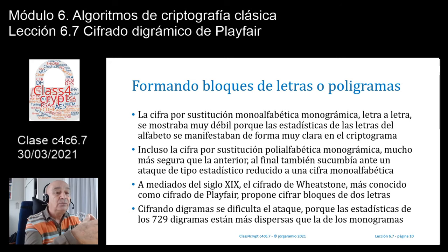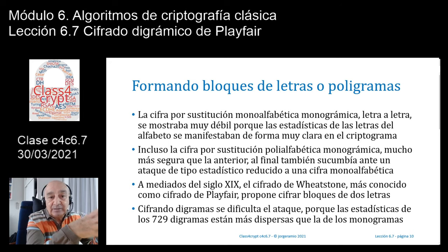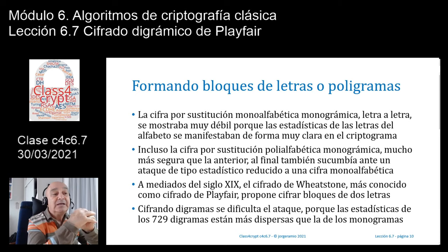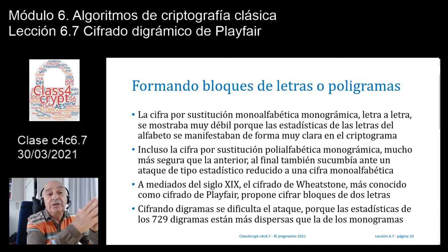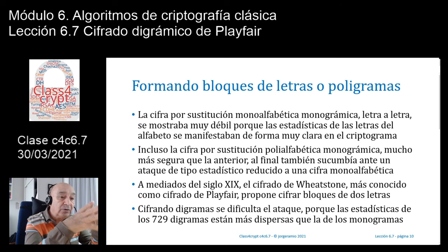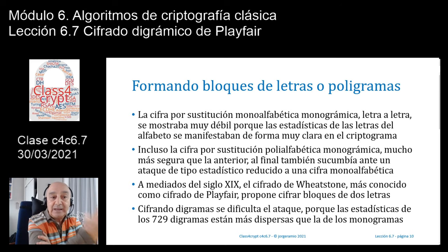Lógicamente habrá un conjunto de digramas que serán bastante frecuentes en el español: la EN, la SE, la MA, etc. Y habrán algunos que ni siquiera existen, como la Q con la Q. El problema es que esas estadísticas están bastante más dispersas. Sí puede haber algunas más significativas que otras: el digrama EN, ES o SE serán mucho más frecuentes que la FN, que es muy poco probable. Pero así y todo, no va a haber esa manifestación tan significativa que tenían los monogramas como la E, la A, la O y la S. Esto hace bastante más difícil el ataque.